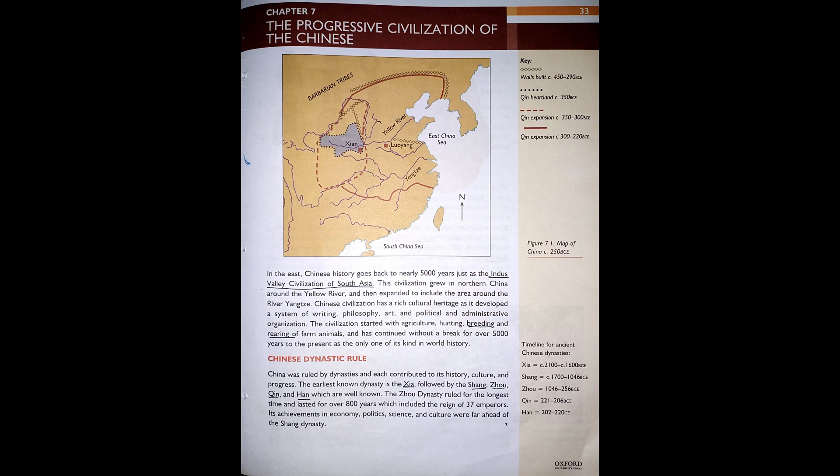Chinese civilization grew in North China around the Yellow River and then expanded to include the area around the River Yangtze. It has a rich cultural heritage, having developed a system of writing, philosophy, art, and political and administrative organization. The civilization started with agriculture, hunting, breeding and rearing of farm animals, and has continued without a break for over 5,000 years to the present, as the only one of its kind in world history.